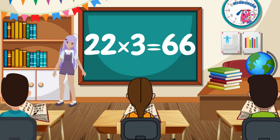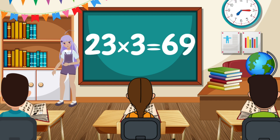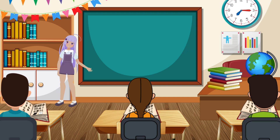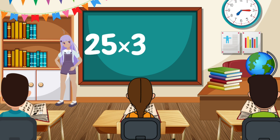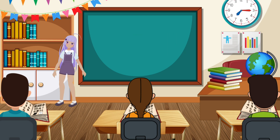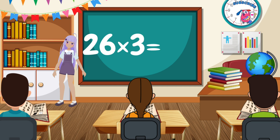23 x 3 equals 69. 24 x 3 equals 72. 25 x 3 equals 75. 26 x 3 equals 78.